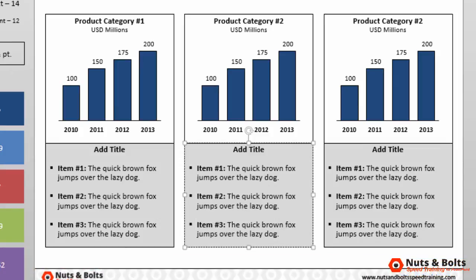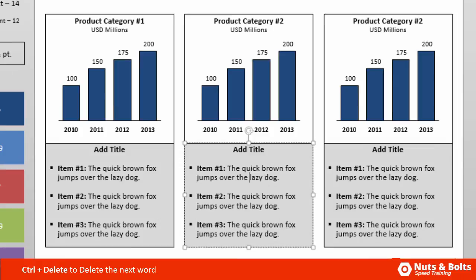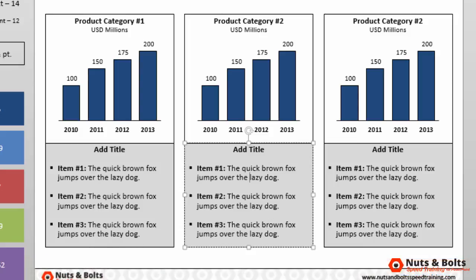Some other good shortcuts with the Control key include Control+Delete. If I want to delete the word 'lazy,' instead of hitting Delete four times, I can hold Control and hit Delete once to delete the entire word — much faster than deleting characters individually. You can also use Control+Backspace to continue deleting words one word at a time, including the space.